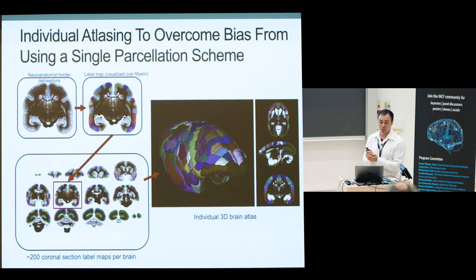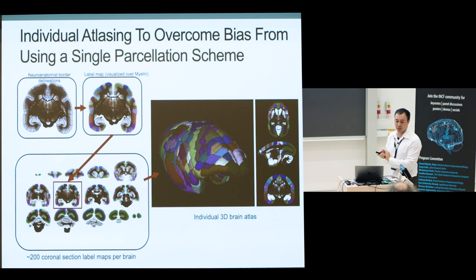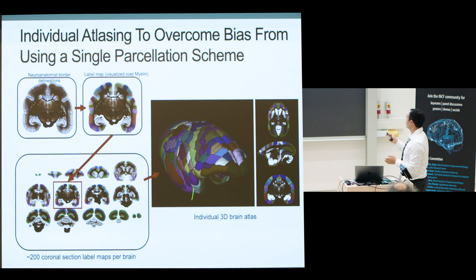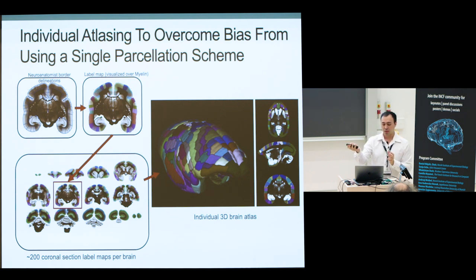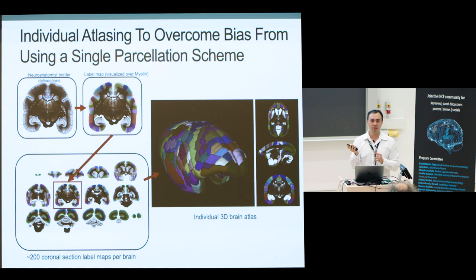To further normalize the data, the neuroanatomist annotated each brain used in this tracer injection work. I made a pipeline to convert their annotations into 3D, so now we have individual cortical atlases for each brain. We can use this information to further normalize the data when mapping into the common brain space. This also helps validate results — we don't have to rely on a single parcellation scheme but have cytoarchitectonic evidence for brain boundaries.